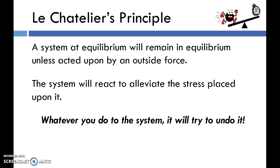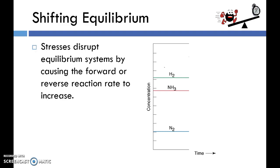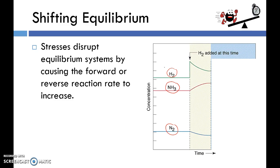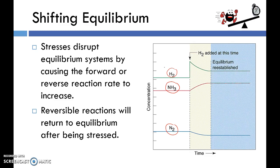In other words, the system is just going to try to undo what you did. If you increase the concentration of one of the reactants, it's going to try to decrease that concentration. If you make the system colder, it's going to try to increase its temperature. You can see we've got a system at equilibrium because the concentrations of H2, N2, and NH3 are all constant. When we add more H2, the system immediately starts to respond, and eventually re-establishes equilibrium — but not necessarily at the same concentrations as before.